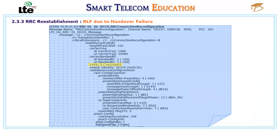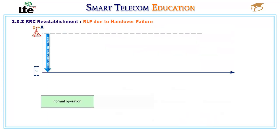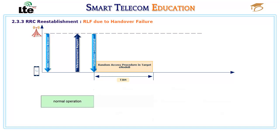The UE receives the T304 timer value in the handover command from the source eNodeB. During normal operation, the UE reports measurements to the source eNodeB. If handover is required to a target eNodeB, the UE receives a handover command and starts the T304 timer. During the T304 time, the UE performs a random access procedure to the target eNodeB.